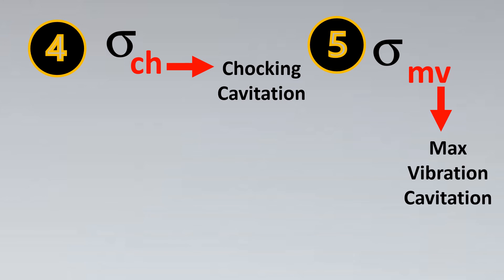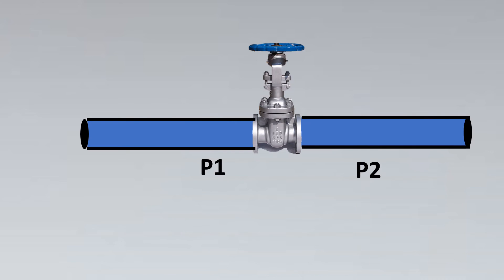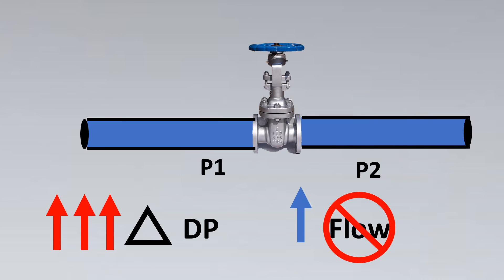Now we have the fourth criteria, which is sigma CH with the suffix CH, which is choking cavitation, and the final one, which is maximum vibration cavitation. These both are very similar to each other and very simple but very essential. Imagine this is your valve and this is your pressure drop happening. We are very sure with the concept that if we increase dp, there is going to be an increase in flow, but if we keep increasing dp, at a point of time flow will not increase. This point is called choked flow.